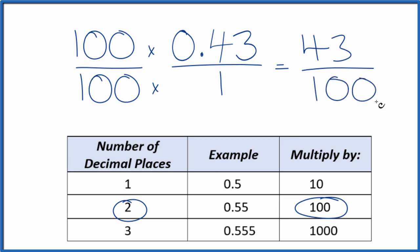And now we have 43 over 100 as our fraction. And we can't reduce this any further. If you divide 43 by 100, you'll end up with the decimal 0.43.